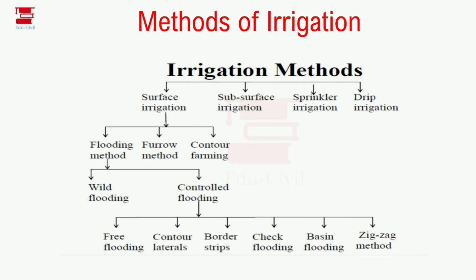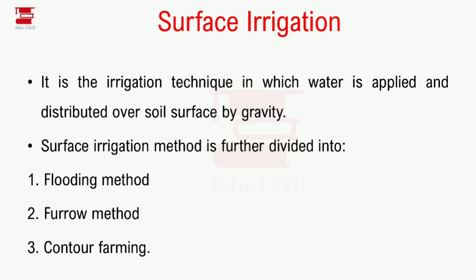Surface irrigation is the irrigation technique in which water is applied and distributed to the soil surface by gravity. Water is applied to the surface and distributed to the soil by gravity.